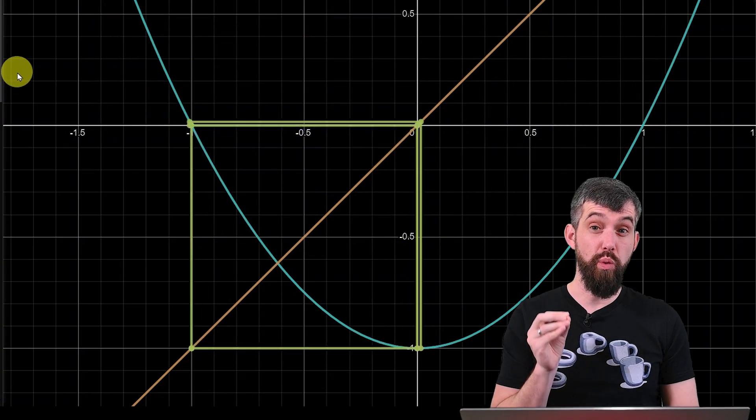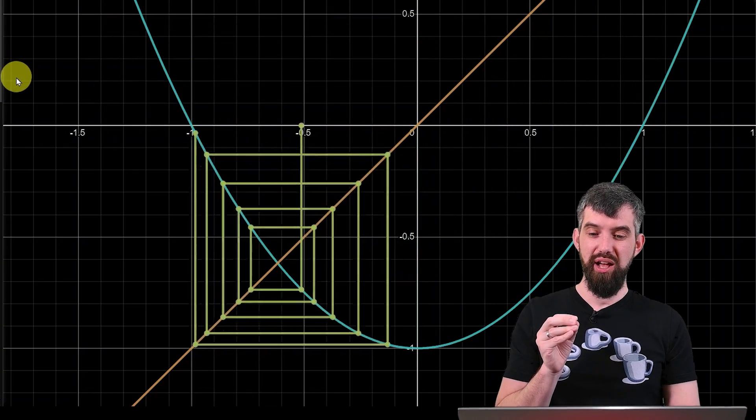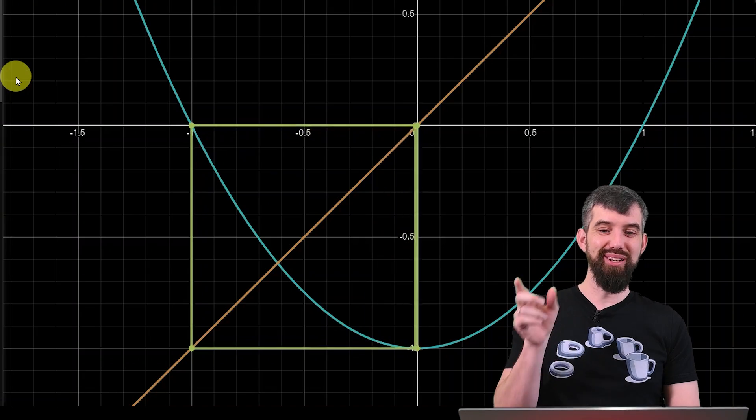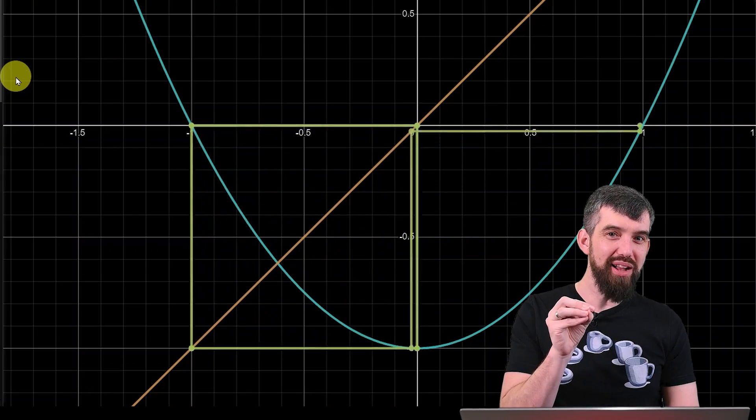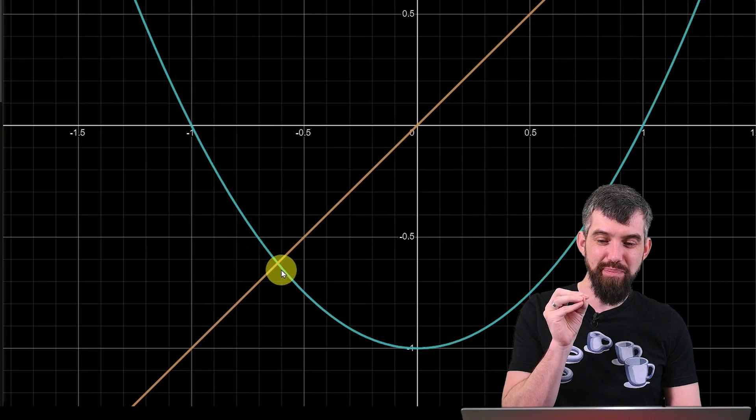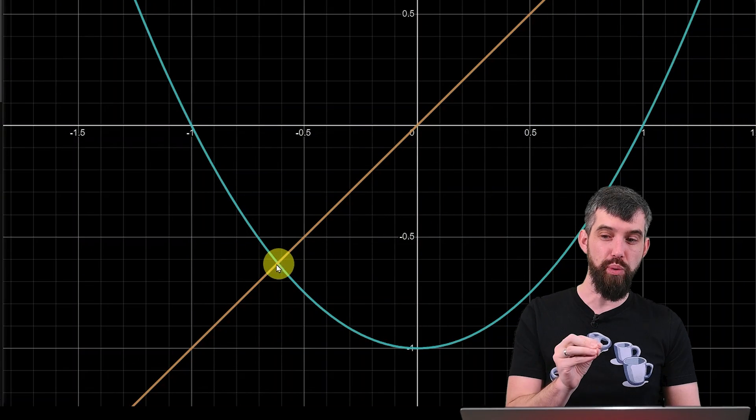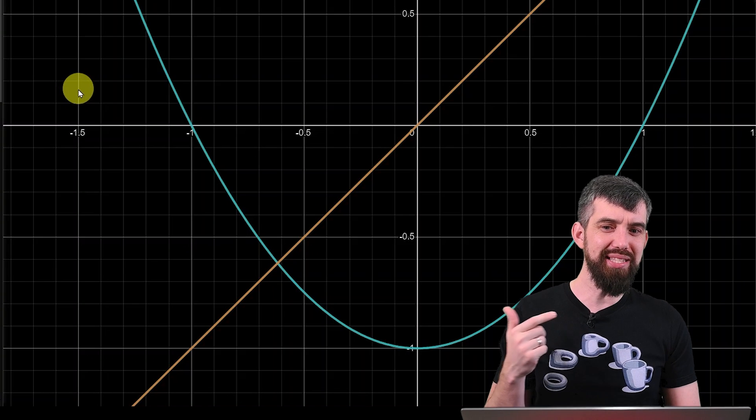And so if I play that animation one more time, what we're seeing is that there's a lot of these spots where it looks like it's going to that minus 1 to 0 square. And there's other spots where it looks like it somehow keeps on connecting back down here at that fixed point. So why is that the case?